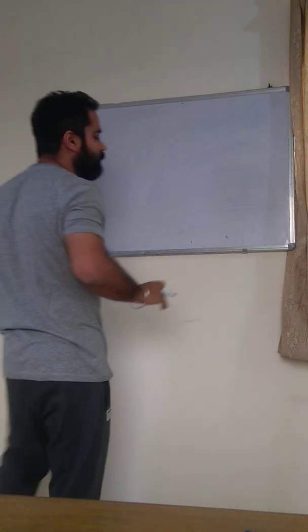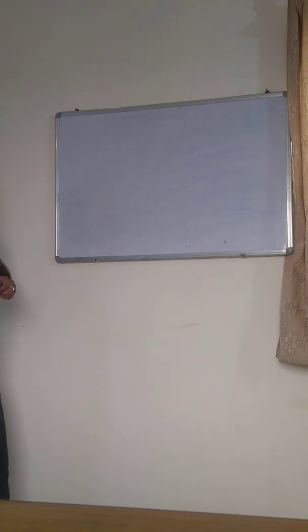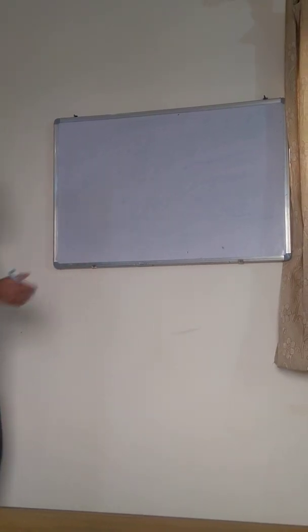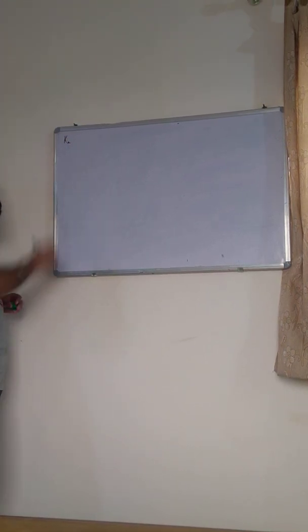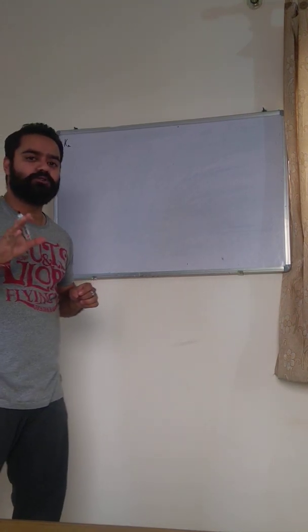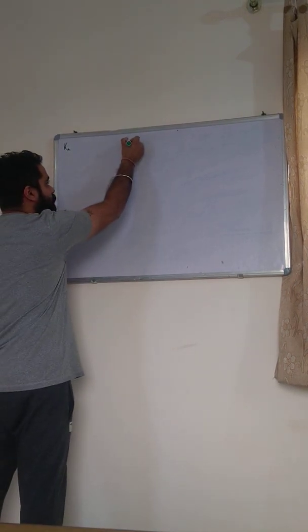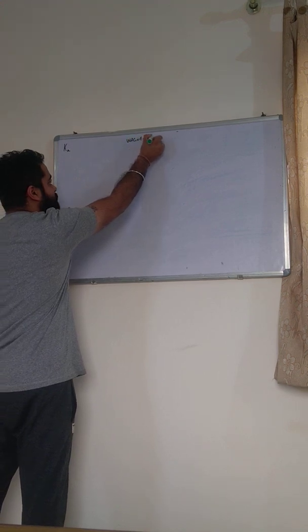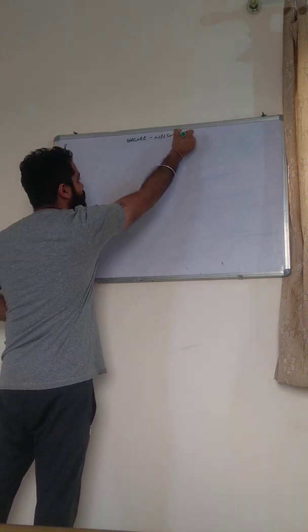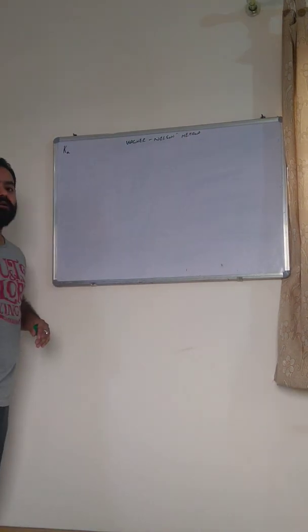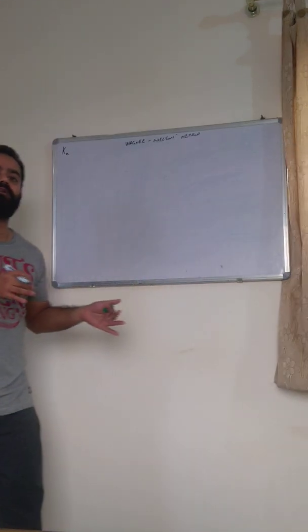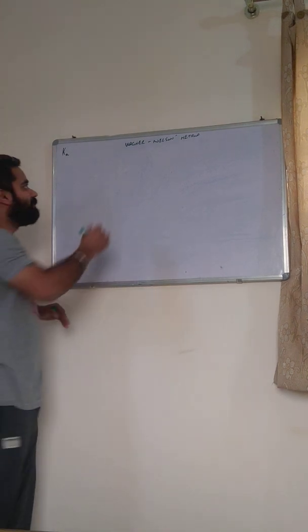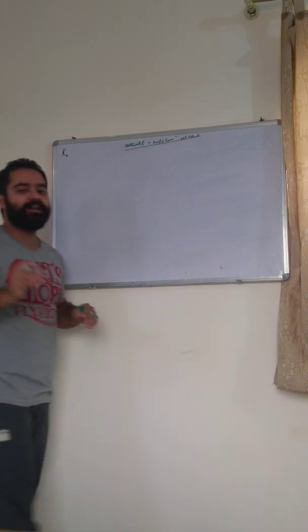Good morning students. Today we are going to learn about the Wagner-Nelson method. The Wagner-Nelson method is used for the estimation of Ka, the absorption rate constant. The absorption rate constant Ka can also be determined by the curve fitting method, and the Wagner-Nelson method is an alternative to that. The advantage of this method is that we do not have to assume whether the drug absorption process follows a first order or a zero order process. This method involves the estimation of the percentage unabsorbed plots.